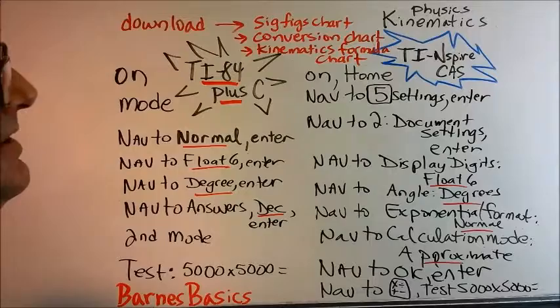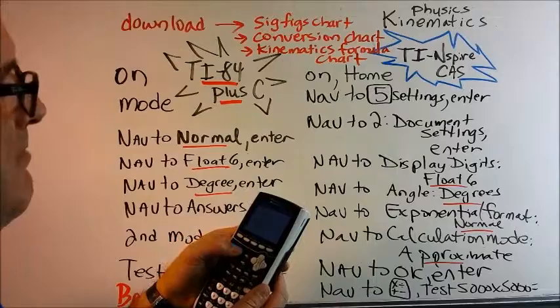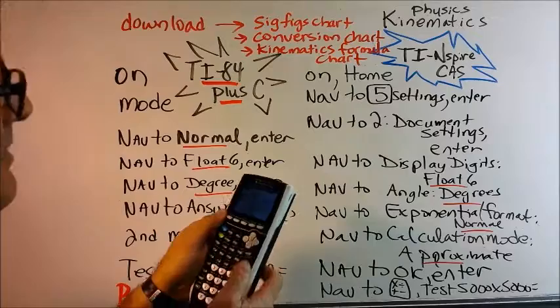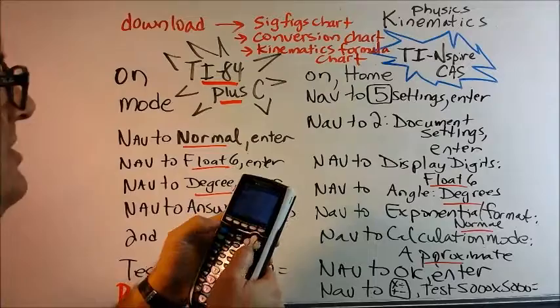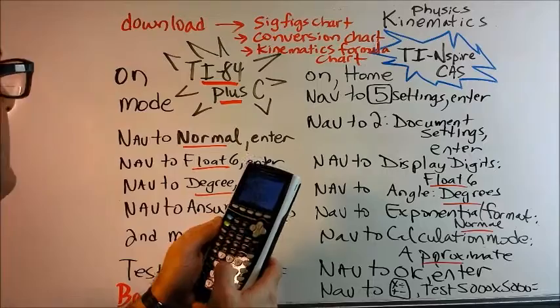So we're going to start out with the TI-84 and configure that one first. Turn your TI-84 on at the bottom left and then hit mode at the top left of the keypad. Then I want you to use this navigation pad to go to normal and hit enter. Mine is actually blinking on normal at this point, so hit enter. And then I want you to navigate down to float 6 and tab over to that with your nav pad and hit enter.